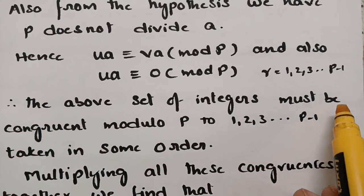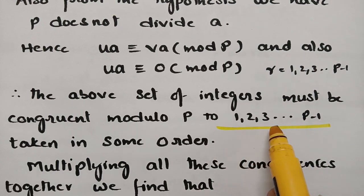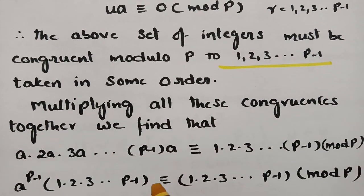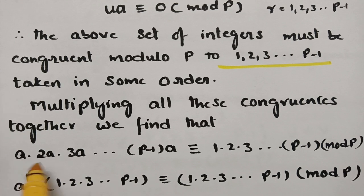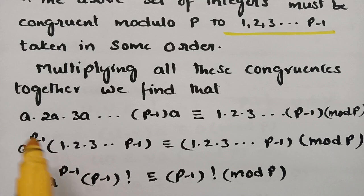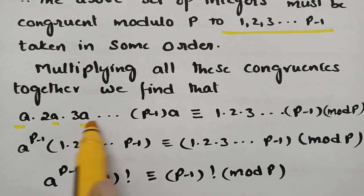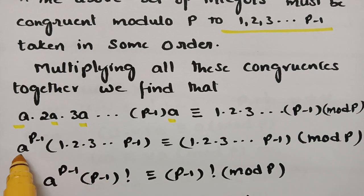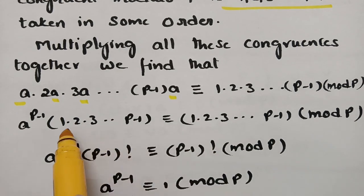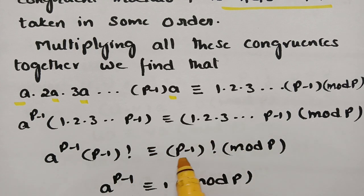Therefore the above set of integers must be congruent to {1, 2, 3, ..., p−1} taken in some order. Multiplying all the congruences together: a · 2a · 3a · ... · (p−1)a ≡ 1 · 2 · 3 · ... · (p−1) (mod p). There are p−1 factors of a, so factoring out gives a^(p−1) · (p−1)! ≡ (p−1)! (mod p).